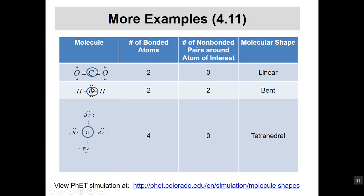Look at water: hydrogen, hydrogen, and two lone pairs around the central oxygen — two bonded atoms, two lone pairs — so it ends up being bent. Carbon tetrabromide has carbon in the middle with four bromines around the outside: four bonded atoms, no non-bonded on the central atom. There may be lone pairs on the bromines, but we're looking only at the central atom. So let's take a look at a PhET simulation for this.